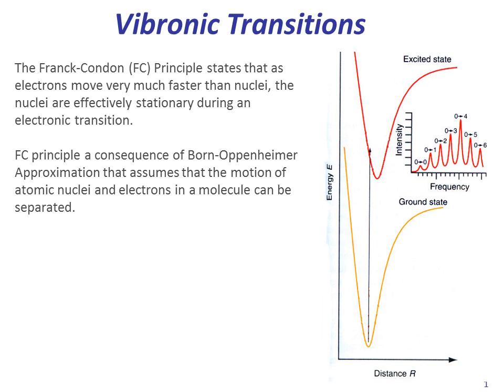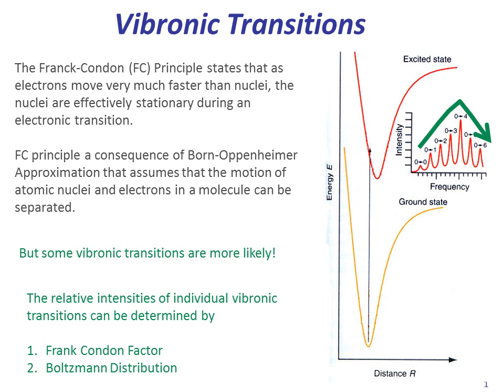As we studied in the last lecture, the Franck-Condon principle states that as electrons move very much faster than nuclei, the nuclei are effectively stationary during an electronic transition, which is a logical consequence of the Born-Oppenheimer approximation that assumes the motion of atomic nuclei and electrons in a molecule can be decoupled. But some Vibronic transitions are more likely than others, and the relative intensities of individual Vibronic transitions can be determined by the Franck-Condon factor and the Boltzmann distribution.